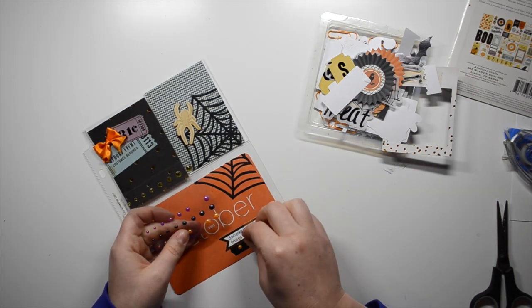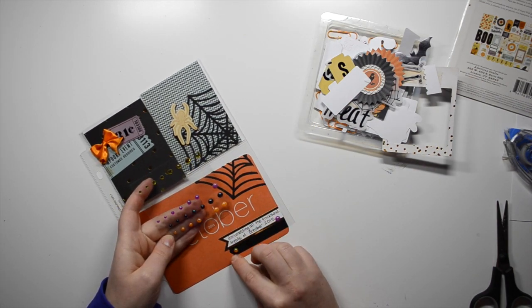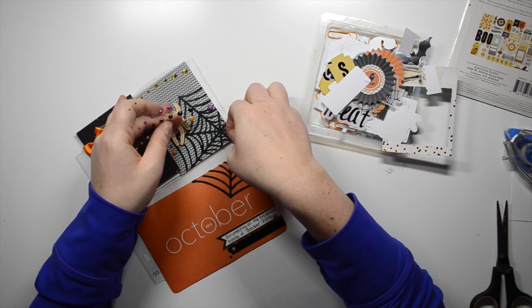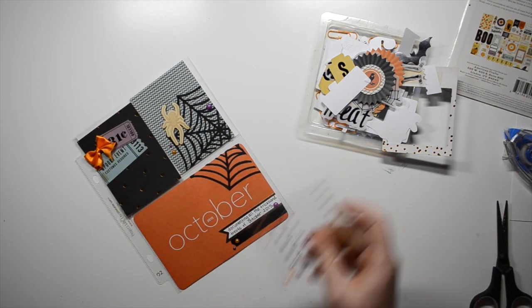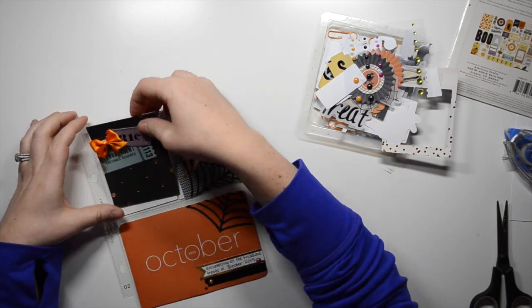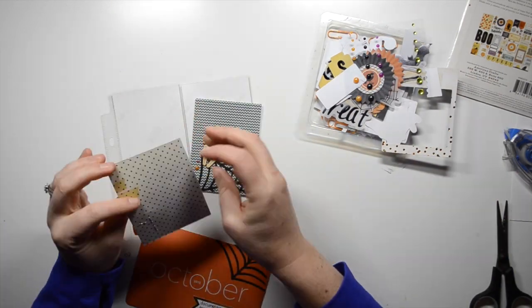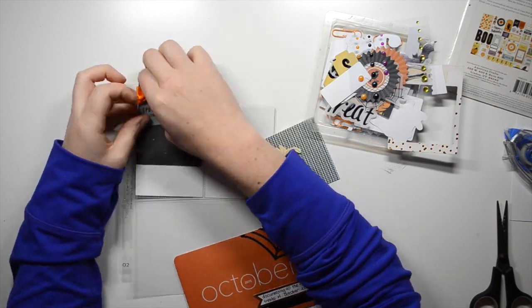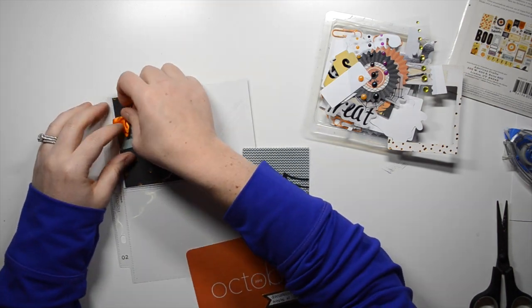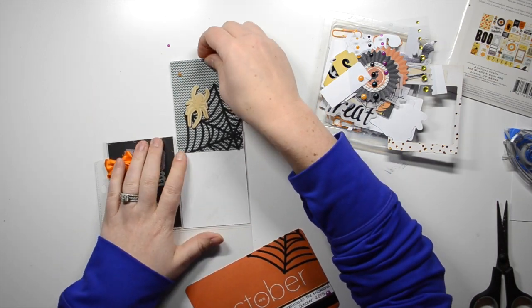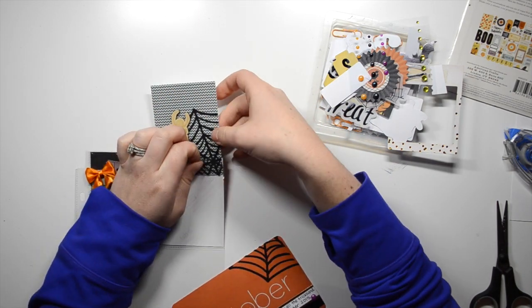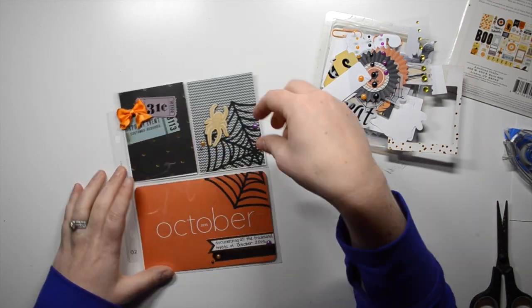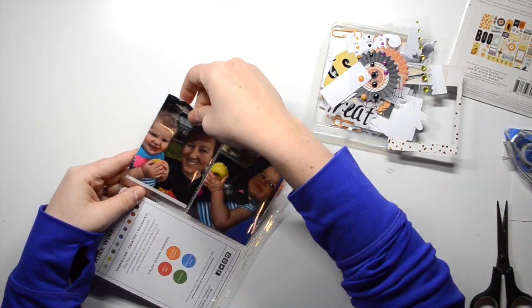And then I use these enamel dots from Recollections, and they are crap. Like, they don't stick at all. So I leave most of them, but they come off and on. So I might have to go back and adhere them down with a little bit of adhesive. So I just tuck those in. I have to do a little bit of trimming, just to get them to fit into the pockets. And here I am moving the bow to the outside, and I really like the way that that turned out.